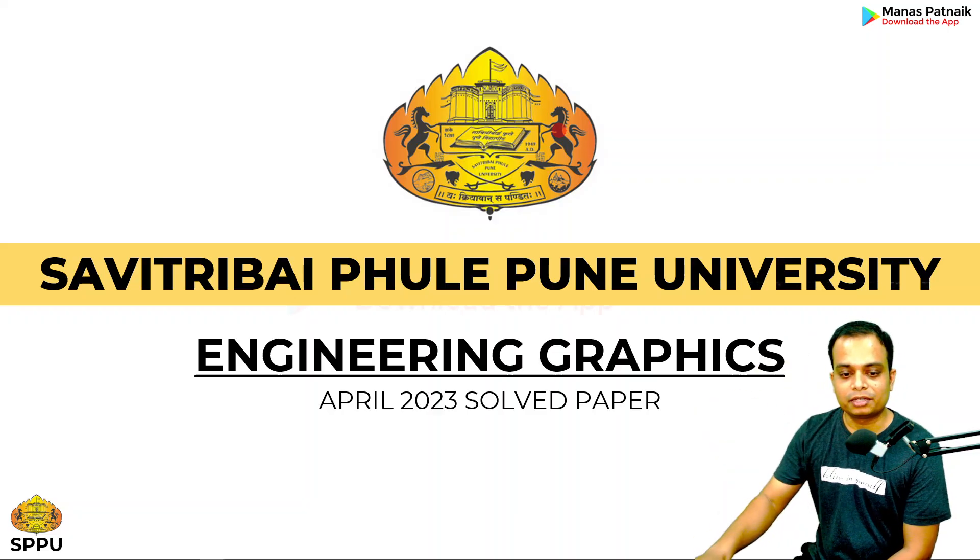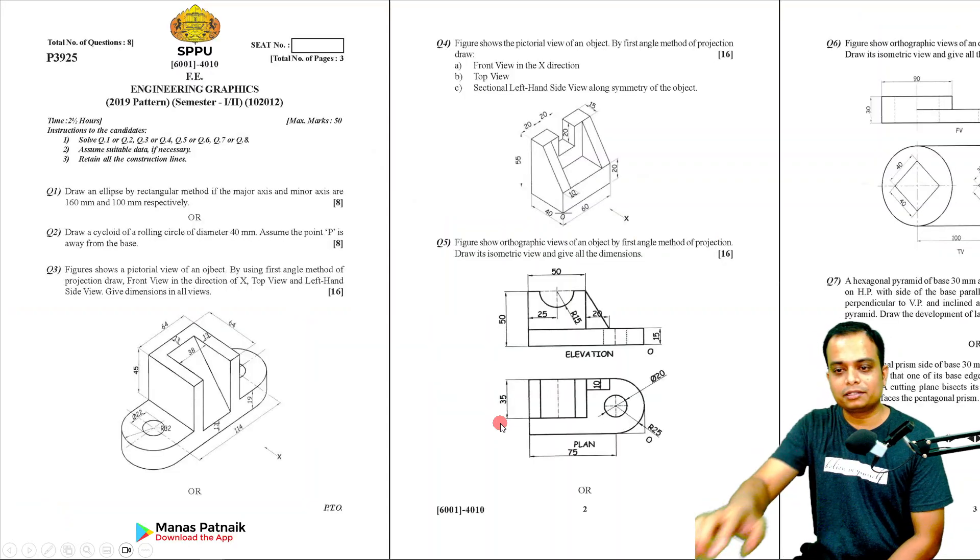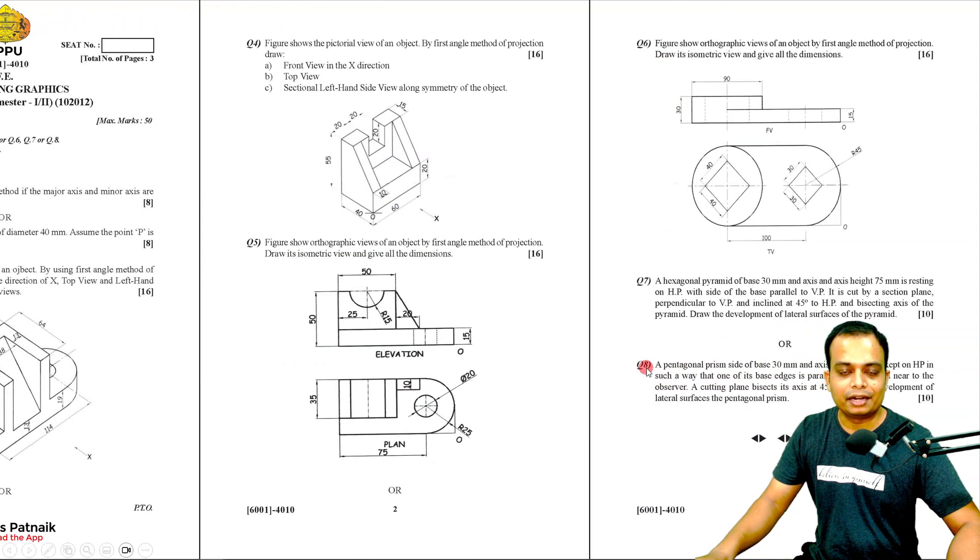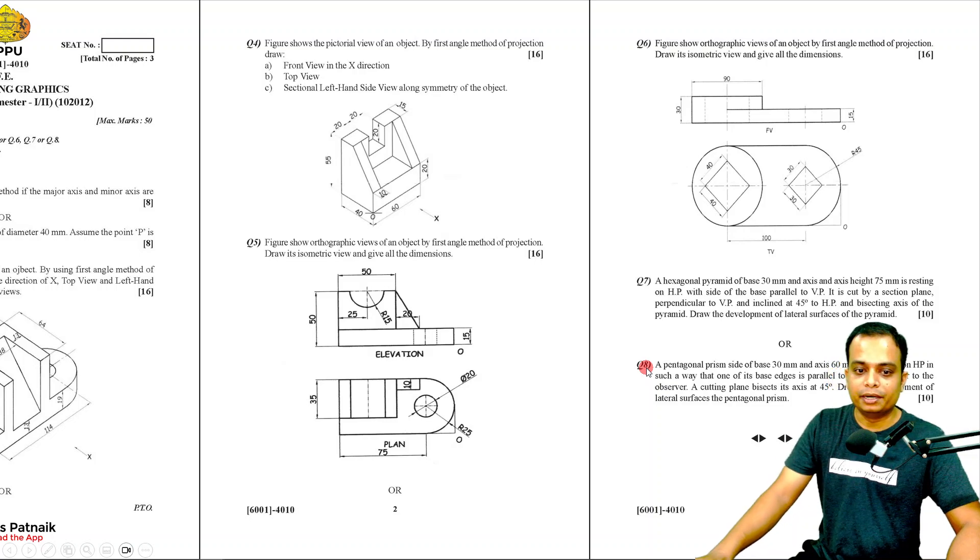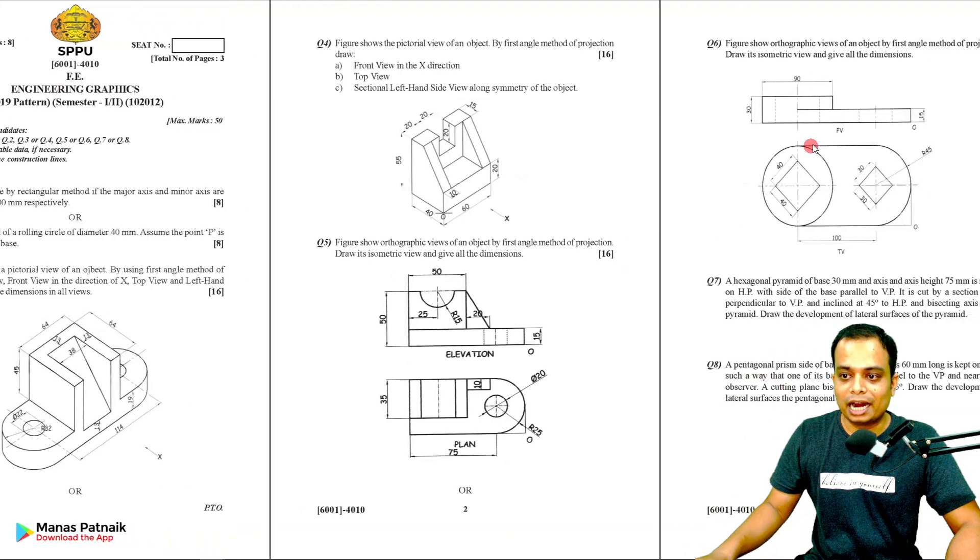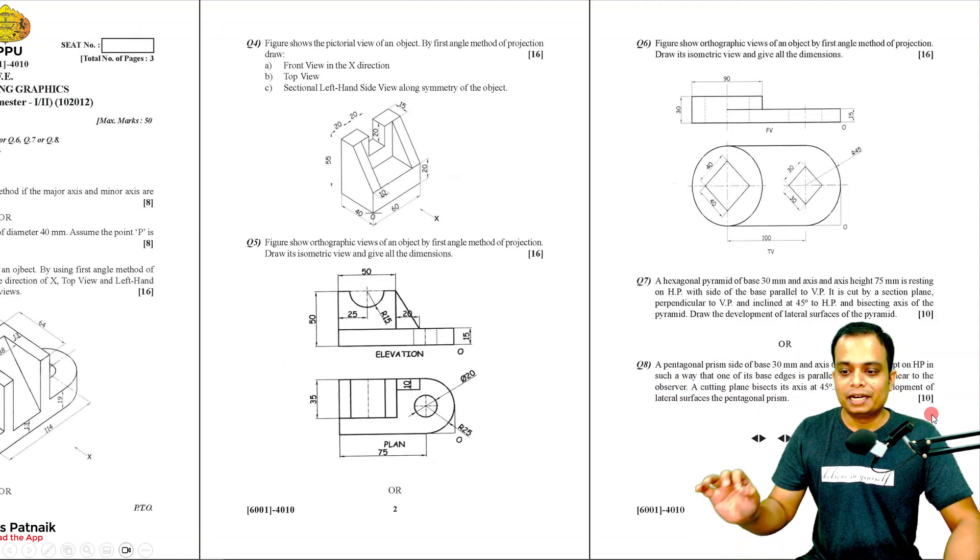This is April session 2023 and there are eight problems that appeared. First two questions are eight marks, third, fourth, and fifth questions are sixteen marks, and seventh and eighth questions are ten marks.